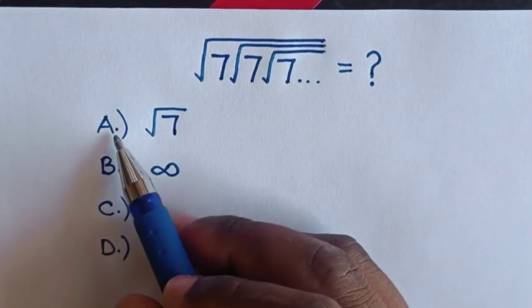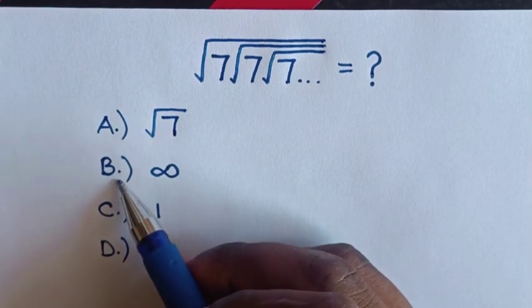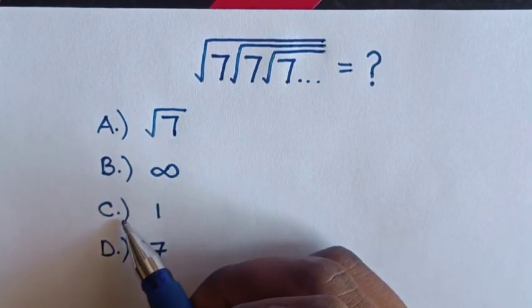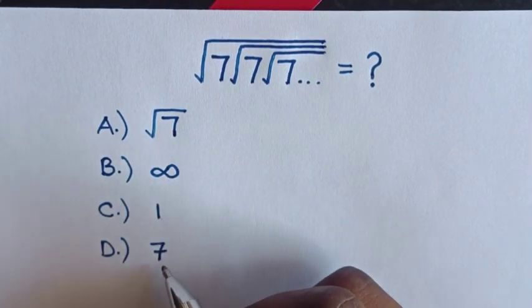To choose between the answer choices: A) square root of 7, B) infinity, C) 1, and D) 7.